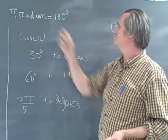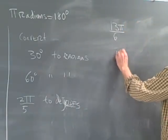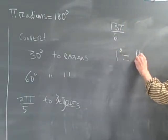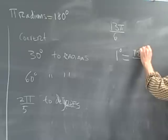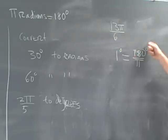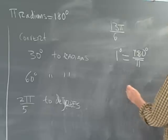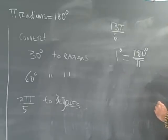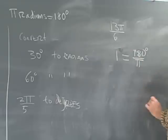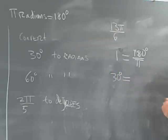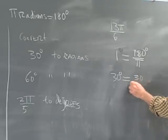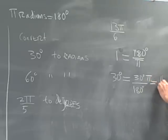So we have 180 degrees as π radians. So 1 degree is 180 over π. If we want 30 degrees, then we want to cancel the degrees. So we've got 30 degrees is equal to 30 divided by 180. The degrees will cancel over π. So that's going to be π over 6.